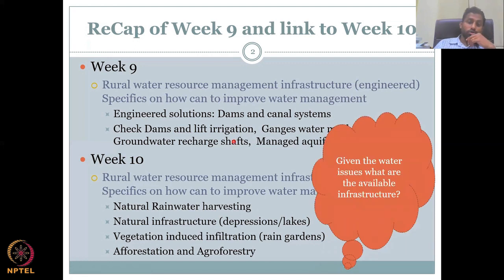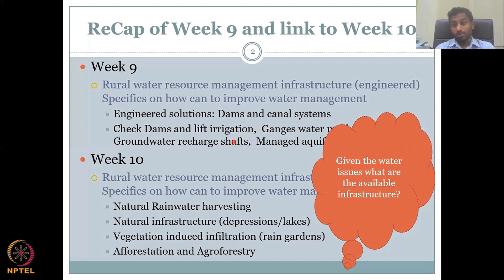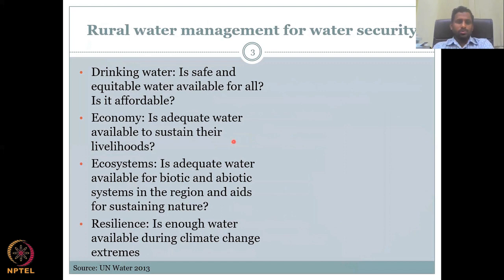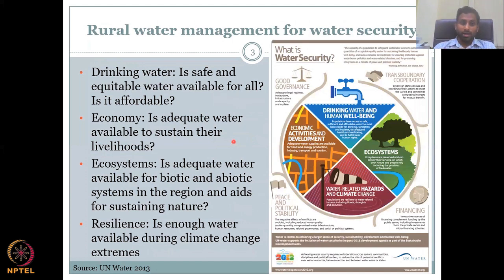Given the water issues, what are the available infrastructures we have? I have given a quick example of water issues in India, especially for rural India. We did look at the definition of water security and its four pillars: drinking water, economy — water for economic upliftment — ecosystem services, and resilience.